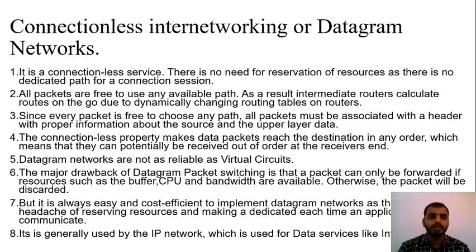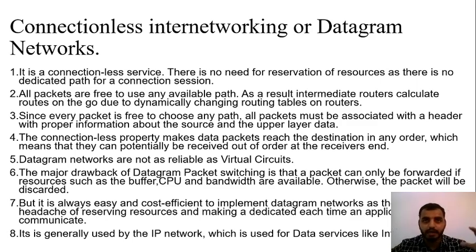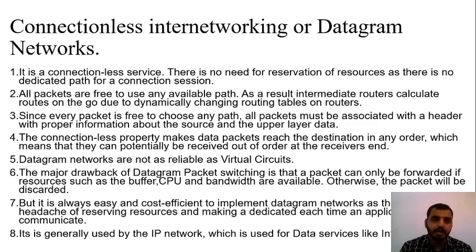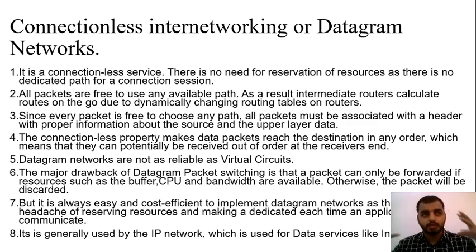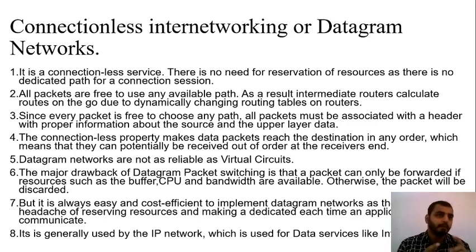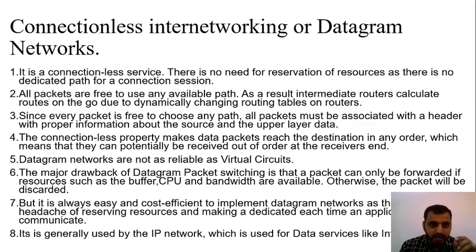Connectionless internetworking, or datagram networks, does not follow a particular path — it is dynamic, dependent on traffic, road conditions, and available resources. For instance, if you want to reach from A to B through intermediate nodes C, D, E, and if C is not working, it will take the path via E. If C and D are not working, it will still find a way via E. However, this dynamic routing can lead to delay or loss of packets.